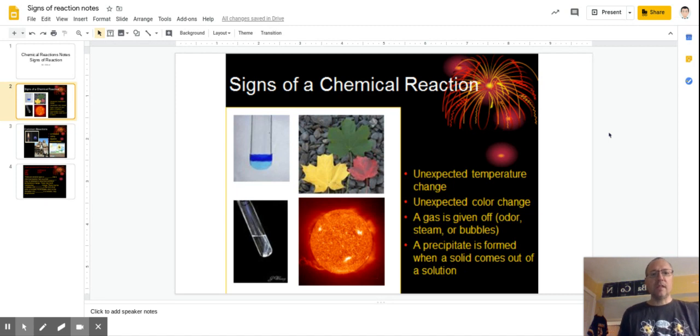Now, when we say unexpected temperature change, if I am mixing up a cake and I were to put that cake in the oven, and it sits in that oven for 30 minutes and I pull it out and it's warmer, that's not unexpected. Doesn't mean it's not a chemical reaction, but it's not an unexpected change that the cake got warmer.